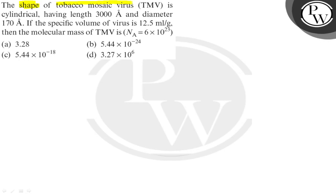Hello, let us see the question. The tip of a tobacco mosaic virus TMV is cylindrical having length 3000 angstrom and diameter 170 angstrom. If the specific volume of virus is 12.5 milliliter per gram, then what is the molecular mass of TMV?